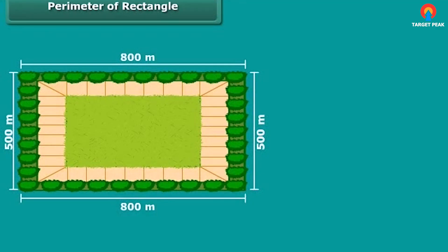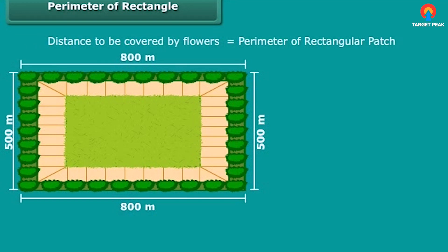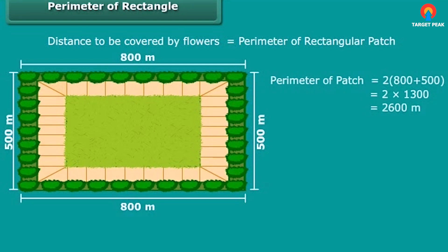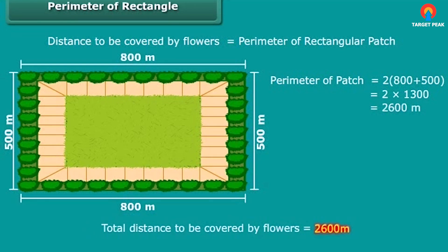We wish to plant flowers on all sides of a rectangular patch of land whose length is 800 meters and breadth is 500 meters. Calculate the total distance to be covered by flowers. The distance to be covered by flowers equals the perimeter of the rectangular patch. The perimeter of the rectangular patch is 2600 meters. Therefore, the total distance to be covered by flowers is 2600 meters.